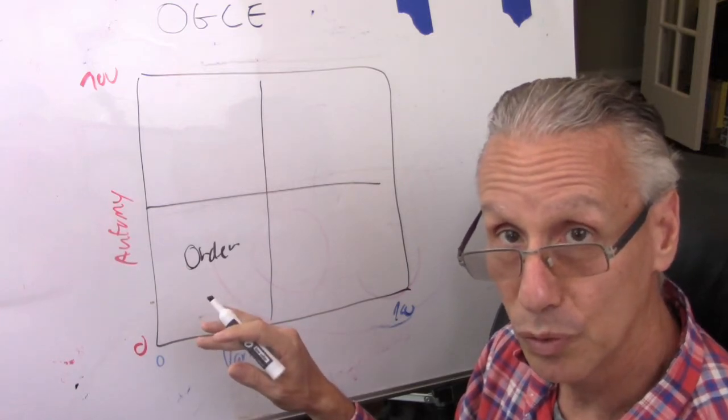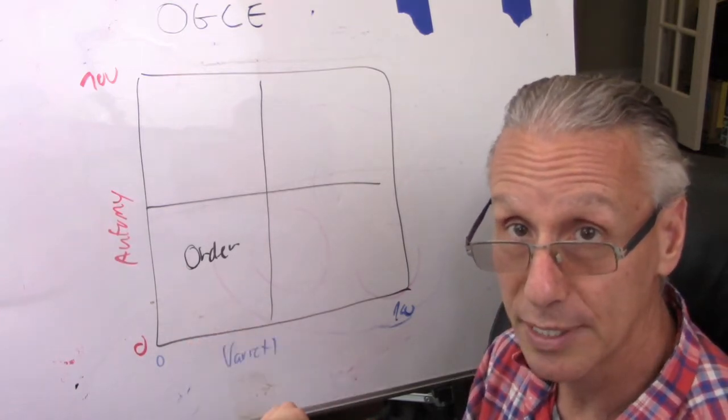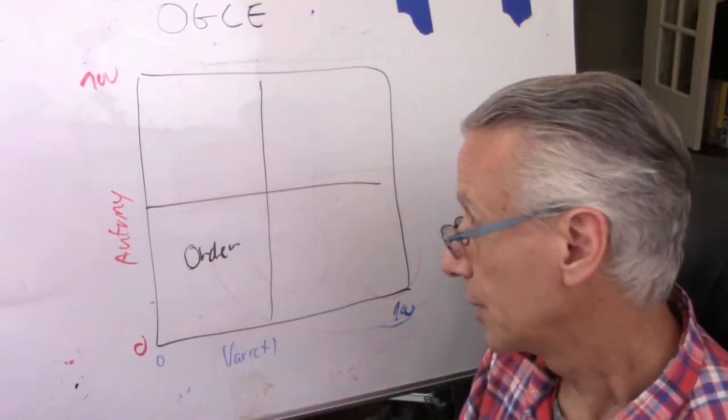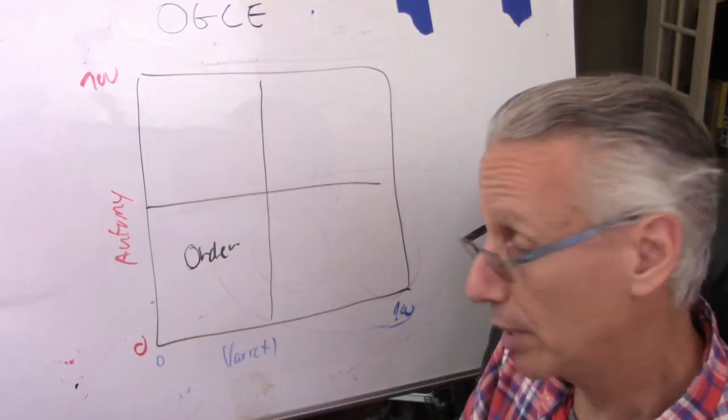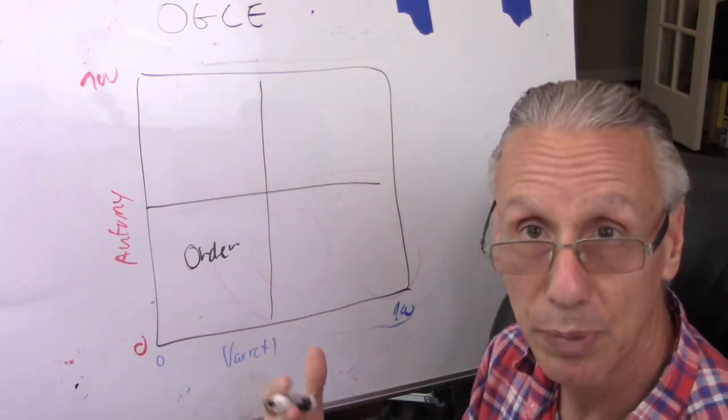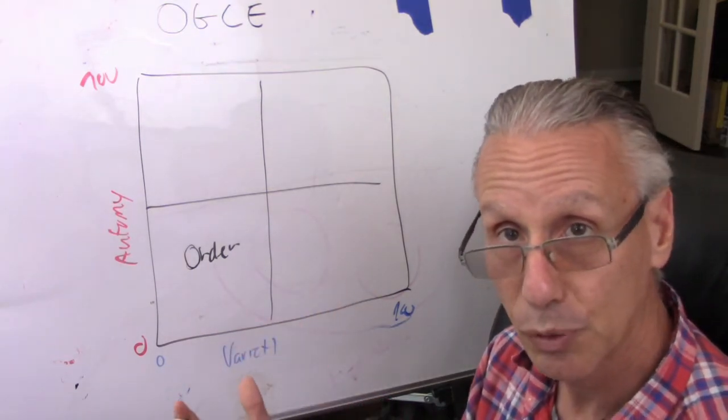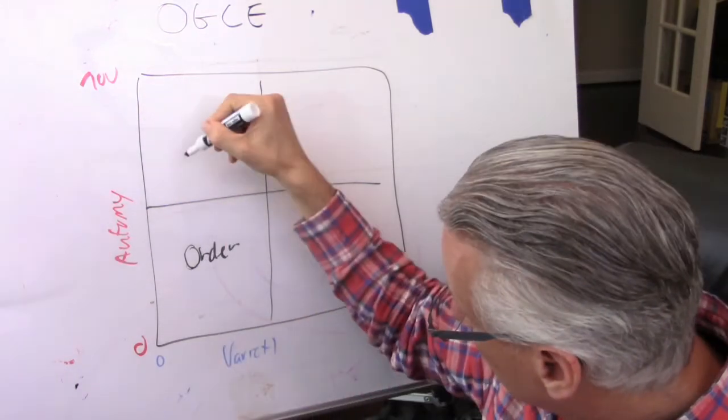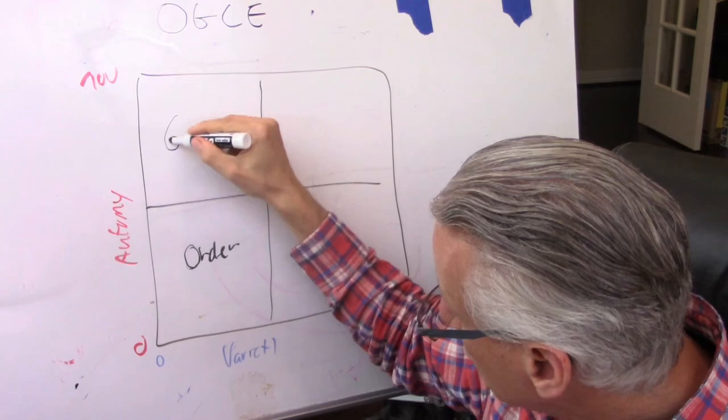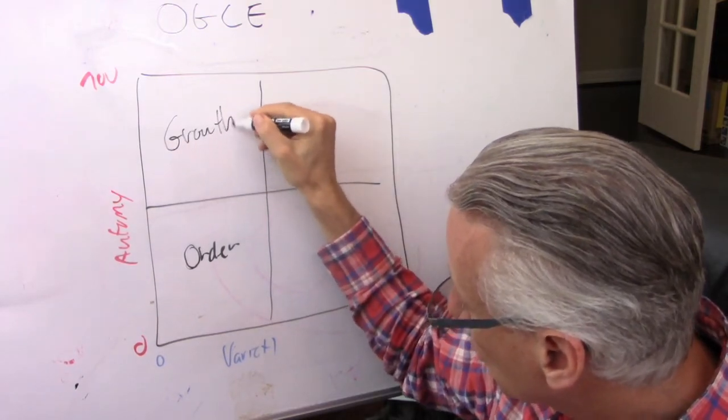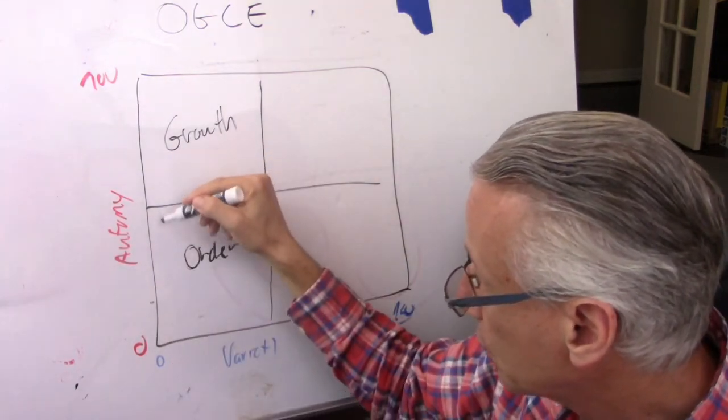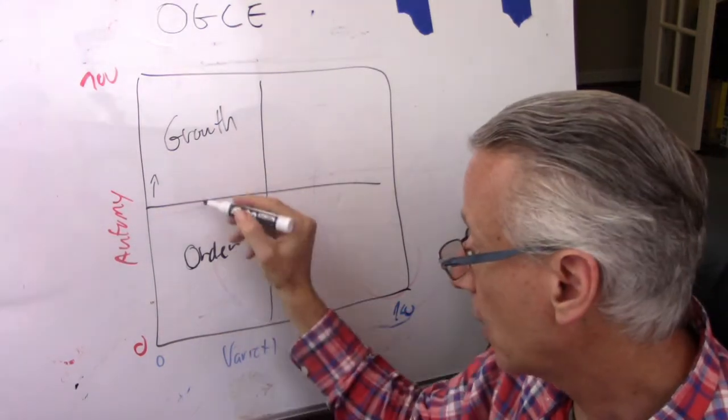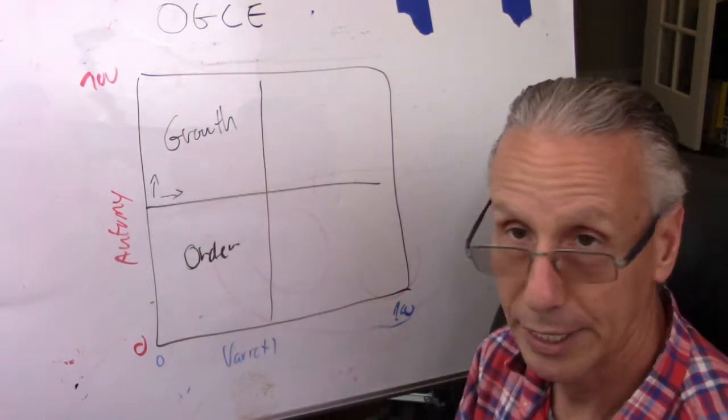So, in order to move away from this stage, what organization is doing, they're giving more autonomy. And that enables people or groups to start to create more new elements. So, that's the G, and that's the growth. What happened here is that I'm increasing autonomy, and I'm starting to have more variety.